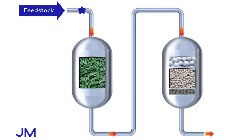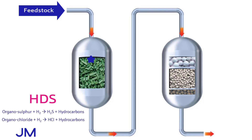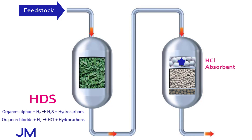Frequently the first step in purification is the hydrodesulfurization reactor, or HDS. This will hydrogenate any organic sulfurs and chlorides to hydrogen sulfide and HCl. If HCl is present, then there is an absorbent dedicated to picking up the HCl. Downstream of that is an absorbent to remove the hydrogen sulfide.